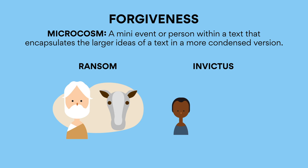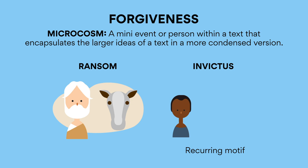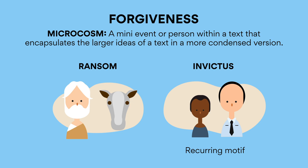Similarly, Invictus uses the little boy Sifo as a recurring motif throughout the film that Eastwood returns to — initially resistant to the Springboks and the Afrikaner who still represented apartheid. Sifo is eventually captured embracing a white police officer at the conclusion of the film. Hence, Eastwood demonstrates the importance of forgiveness through the microcosm of the little boy Sifo.